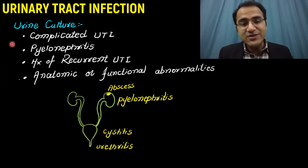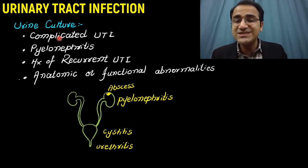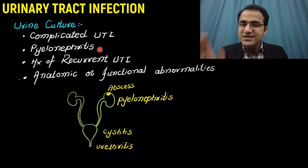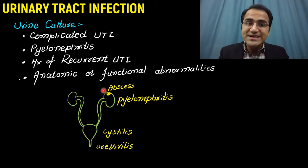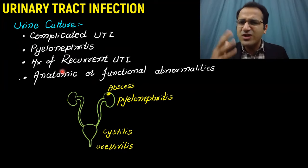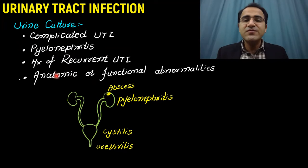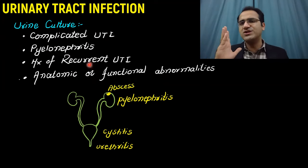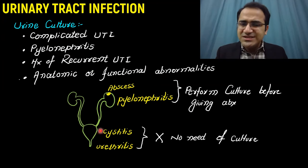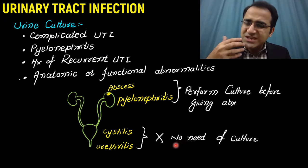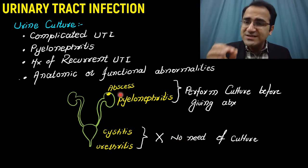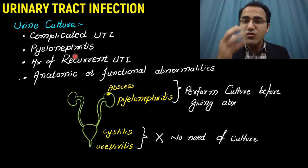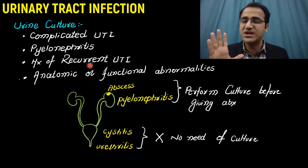An important investigation is urine culture. Culture is done in complicated UTIs with all the P's, in pyelonephritis where infection has ascended to the kidneys, in recurrent UTI, and if the patient has anatomic or functional abnormalities. In urethritis and cystitis generally, culture is not needed and treatment can be started based on urinalysis. But in pyelonephritis, abscess, or complicated UTI, you must perform culture before starting antibiotics.